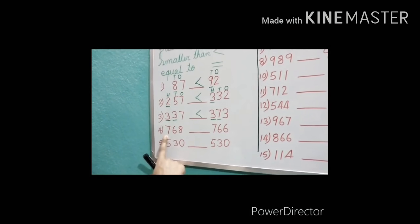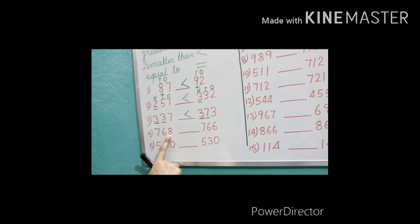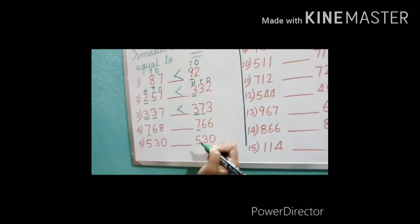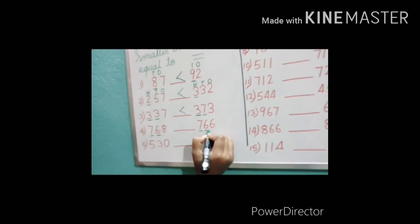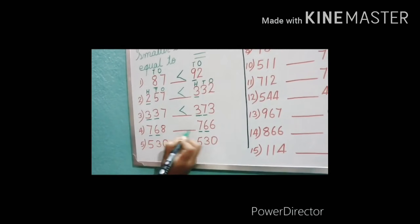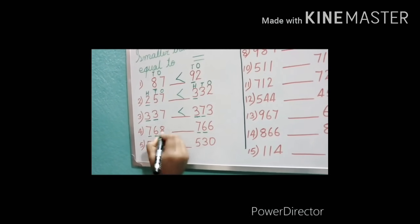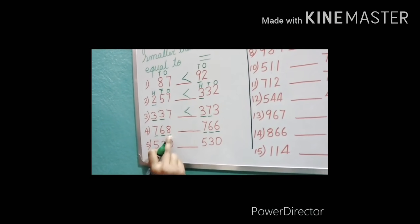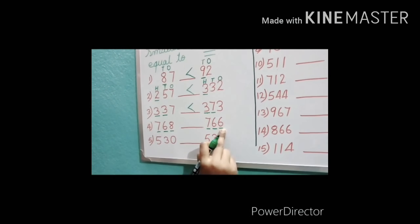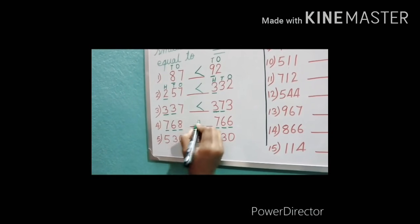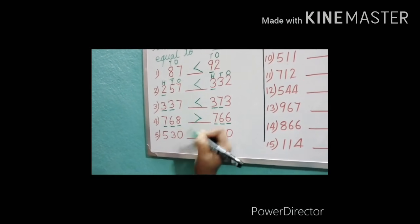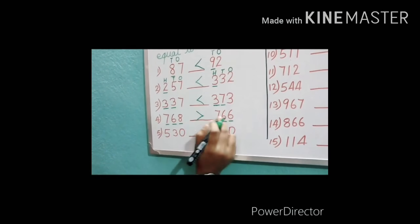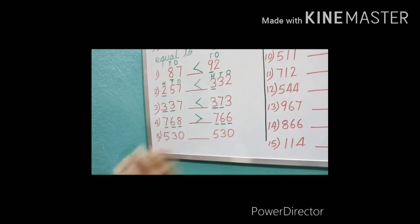Question number 4: 768 and 766. First digit: 7. Second digit: 6. Now the second digits are also equal. So what will we do? We will go to the third digit — that is the ones place digit. Here is 8 and here is 6. We can very easily tell that 8 is greater than 6. So which is the greater number? 768. Greater side open and smaller side closed.